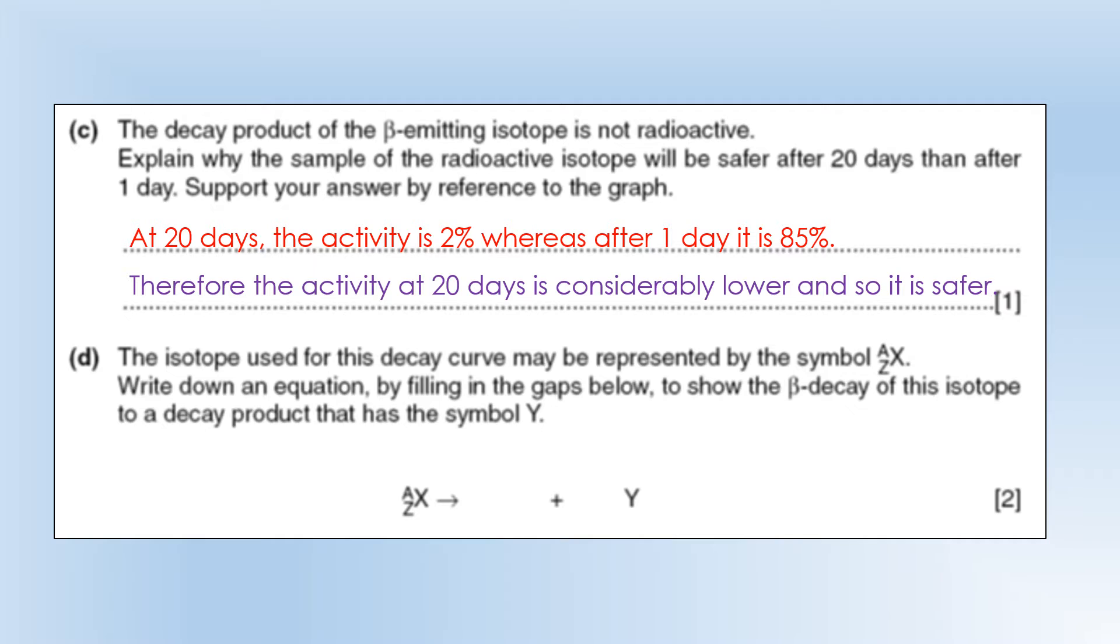So the isotope is used, maybe represented by the AZX notation. Write down an equation by filling in the gaps to show the beta minus decay. So, first of all,